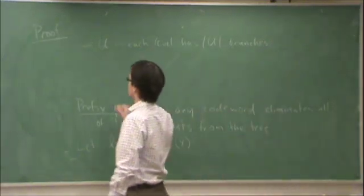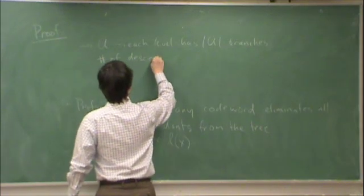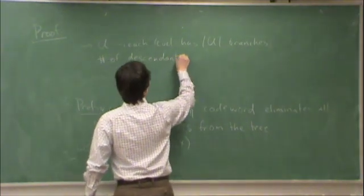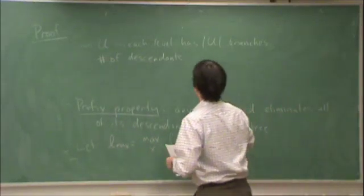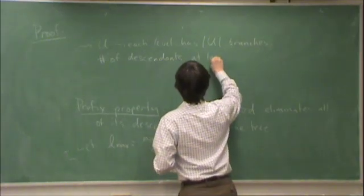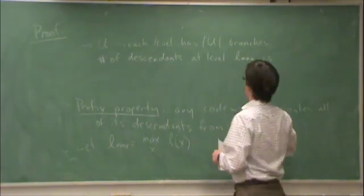So, the number of descendants, without eliminating any descendants, the number of possible descendants at level Lmax is what?